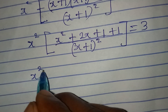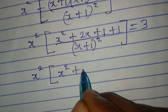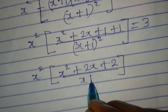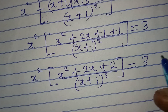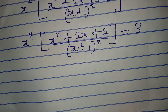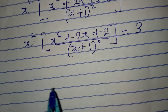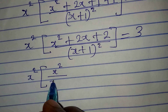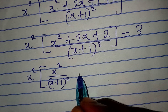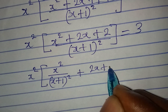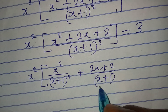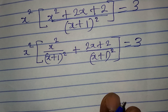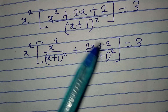Continuing, we have x squared into brackets: x squared plus two x plus two, all over x plus one squared, and this is equal to three. The next thing I'm going to do is break the terms in the bracket, so I have x squared times the quantity x squared over x plus one all squared, plus two x plus two over x plus one all squared, close brackets, equal to three. I only split what we have in the bracket.